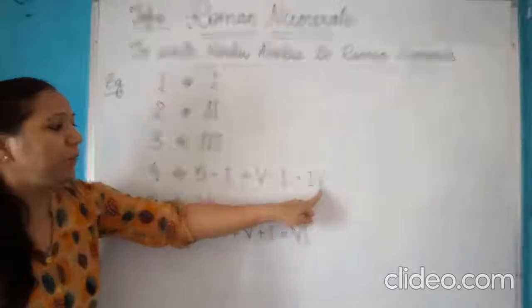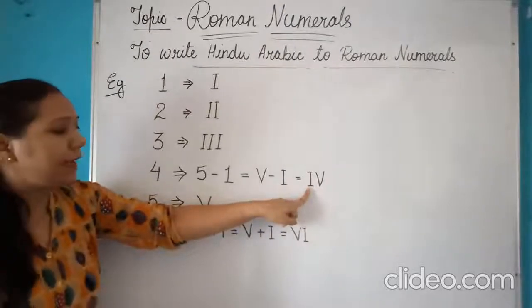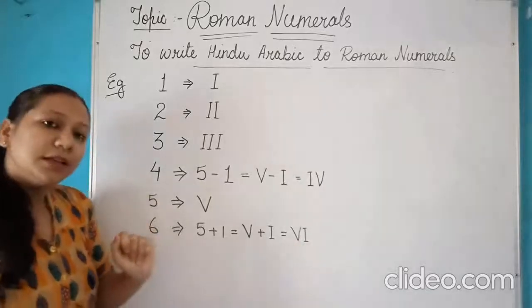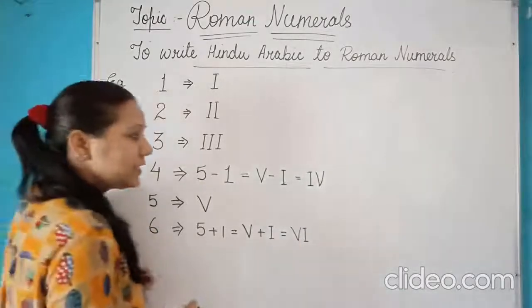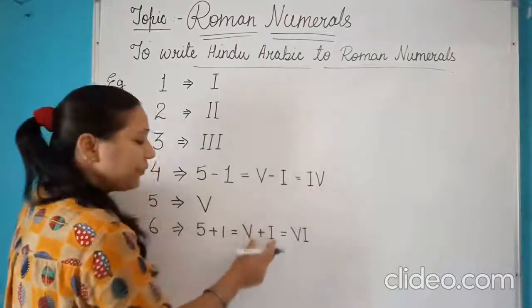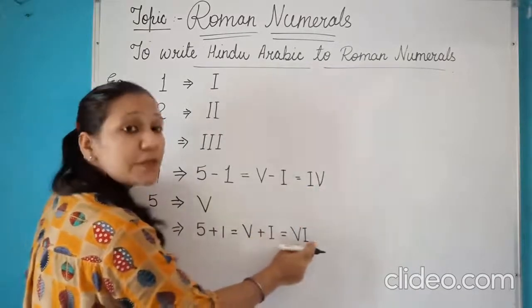If it is subtraction, it will be written as preceding. If it is plus, then it will be written as successor. Or you can say if it is minus, it will become prefix. If it is plus, it will become suffix.